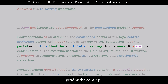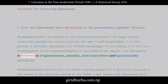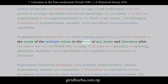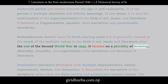In one sense, postmodernism is also the continuation of the experimentation in the field of art, music, and literature. It believes in fragmentation, paradox, mini-narratives, and questionable narratives. Postmodernism doesn't have its finite starting point but is generally viewed as the result of multiple voices in the field of art, music, and literature after the end of the Second World War in 1945. It focuses on a plurality of meaning, absurdity, sexuality, and experiments with narratives and structure of literature.